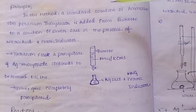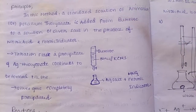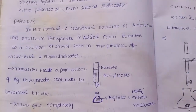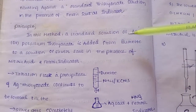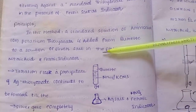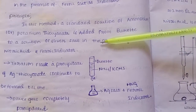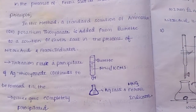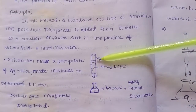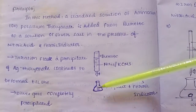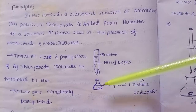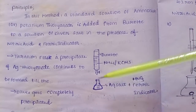In this method, a standard solution of ammonium or potassium thiocyanate is added from a burette to a solution of silver salt in the presence of nitric acid and a ferric indicator.